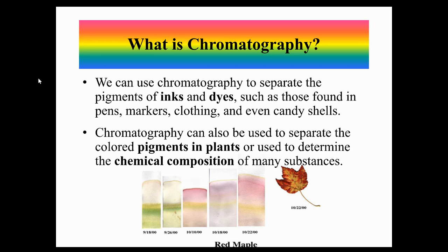Here we have an image where somebody took maple leaves at different times of the year, blended them into a kind of leaf tea, put them on paper, and let the solvent travel through the ink. As the water travels up, it separates into individual components. In this picture you can see different components throughout the months of September and October — you can still see a yellow line all the way across, showing chlorophyll and carotenes.